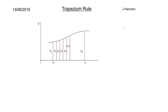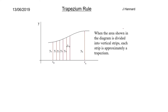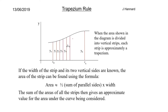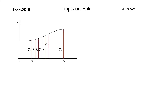Here's a diagram showing the curve split into lots of little strips. When the area is divided into vertical strips, each little strip is approximately a trapezium — you've got two sides, a little line joining them at the top, and the bottom as well. If the width of the strip and its two vertical sides are known, the area of each strip can be found using the formula. The sum of all the strips' areas gives an approximate value for the area under the curve.